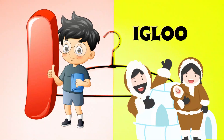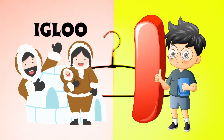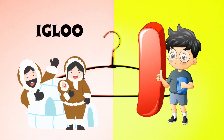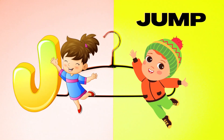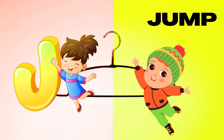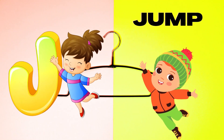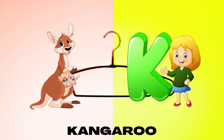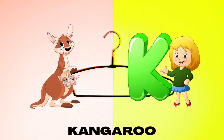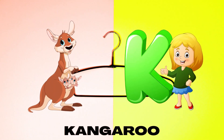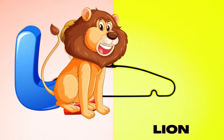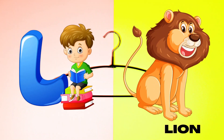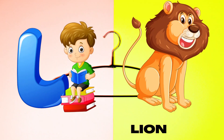I is for Igloo, I-I-Igloo. J is for Jump, J-J-Jump. K is for Kangaroo, K-K-Kangaroo. L is for Lion, L-L-Lion.